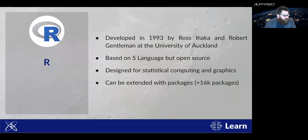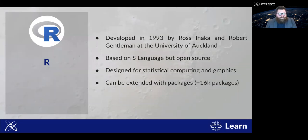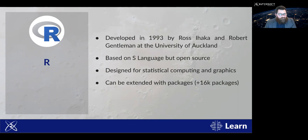Contrary to Python, which was built as an all-purpose language, R was designed in a university for statistical computing and graphics for publications. This is obvious when you look at the packages — it was clearly designed with statistical data science in mind. In terms of packages, R has around 16,000, which is about a tenth of Python's, but they are very good packages. Don't let the lower number put you off. All R packages are curated and published through CRAN — a network of people publishing packages along with documentation.